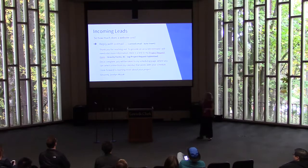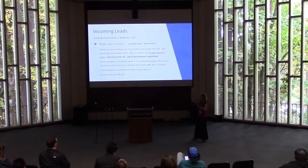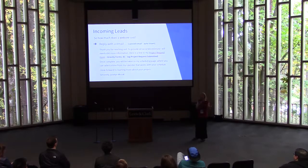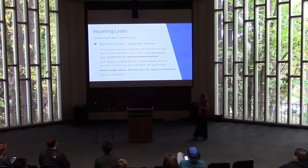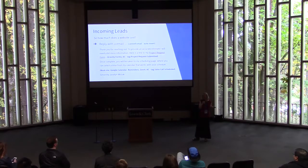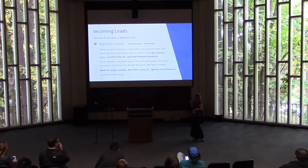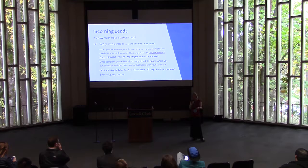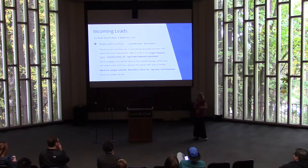The project request form is a Gravity Form on my website. When they submit the form, I use ActiveCampaign — use whatever mail system you want — and I tag them. The tag says 'project request submitted,' which gives me a pulse on where they're at. Once they complete the form, they're taken to my scheduling page. I use BookMe — Acuity works well too. It lets prospects pick a 20-minute sales call slot tied to my Google Calendar. Reminders go out a day before and an hour before, they're told the meeting is in a Zoom room, and I tag them in ActiveCampaign that the sales call was scheduled.